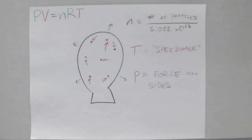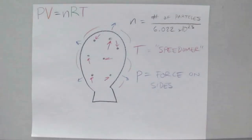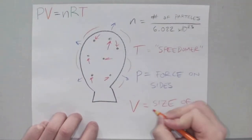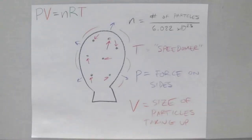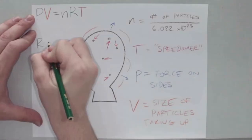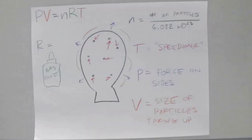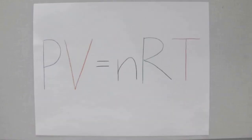Each time a particle hits the side, that's exerting a pressure on the outside of it. As that pressure is being exerted, the balloon expands to a certain size — so volume is how big the particles prop it up to be. Volume is not the actual size of the particles themselves, but the size that the particles are causing the balloon to be. Another way to think of it: the particles are like tent poles and the volume is the actual size of the tent itself — there's a lot of empty space. And lastly, we have R, our gas constant, which is the glue that holds the ideal gas law together.